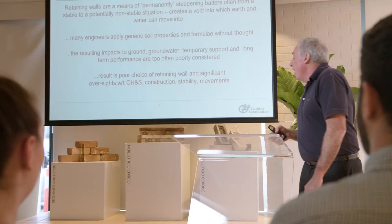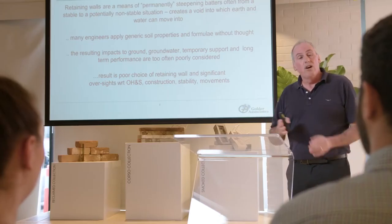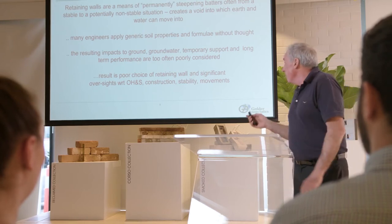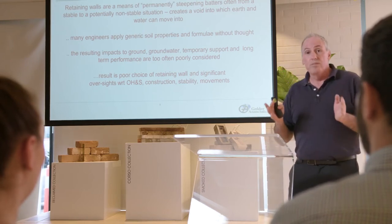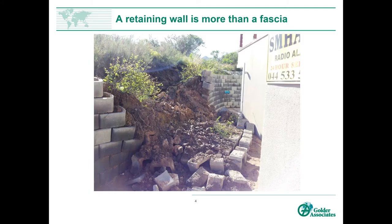Because of this, you end up with a poor choice of retaining wall system type. You can have significant oversights with respect to occupational health and safety, especially under temporary conditions. You can get instability or excessive movement. Both instability and excessive movement are forms of failure. One thing you must remember: a retaining wall is not only a fascia. A fascia provides no support. It is what is behind the wall that provides support.